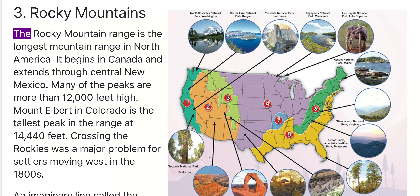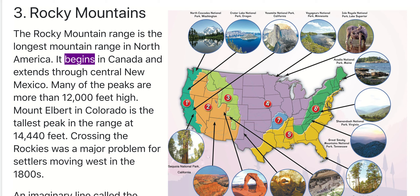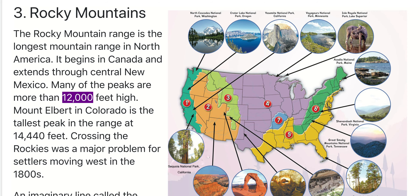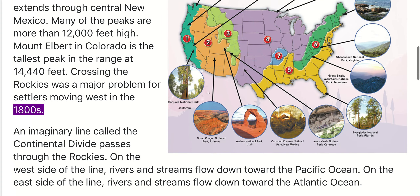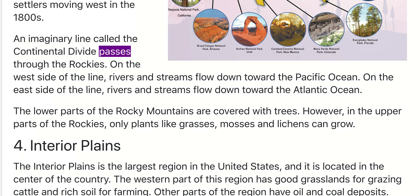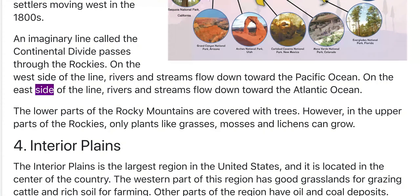3. Rocky Mountains. The Rocky Mountain Range is the longest mountain range in North America. It begins in Canada and extends through central New Mexico. Many of the peaks are more than 12,000 feet high. Mount Albert in Colorado is the tallest peak in the range at 14,440 feet. Crossing the Rockies was a major problem for settlers moving west in the 1800s. An imaginary line called the Continental Divide passes through the Rockies. On the west side, rivers and streams flow toward the Pacific Ocean; on the east side, they flow toward the Atlantic Ocean.